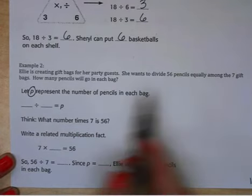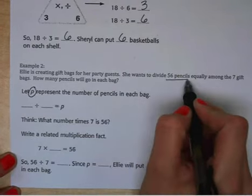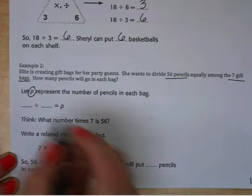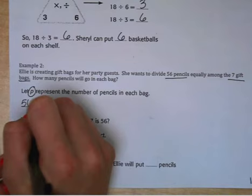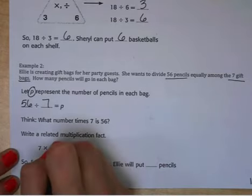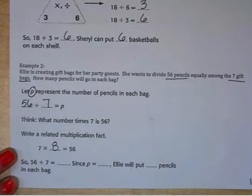So we know that we have 56 pencils and 7 gift bags. If we do 56 divided by 7, that will give us P, which is our unknown. So think about it this way. What number times 7 is 56? And then we can write a related multiplication fact. We know that 7 times 8 equals 56. So 56 divided by 7 equals 8.